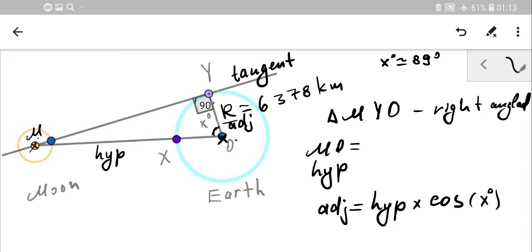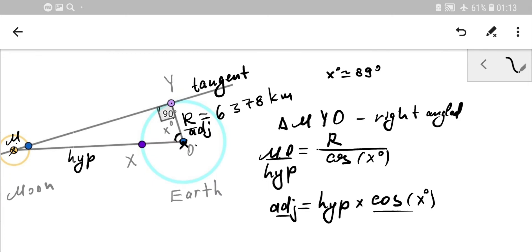From this, we can express hypotenuse as adjacent side over cos(x). The adjacent side in our case is the radius.